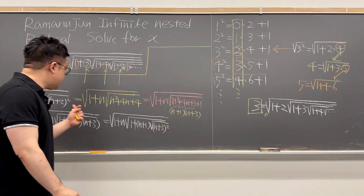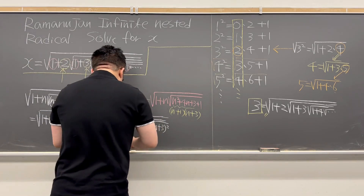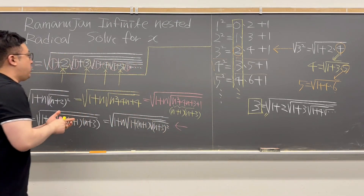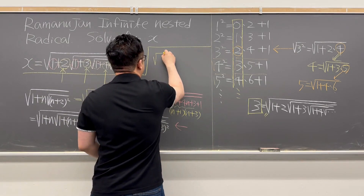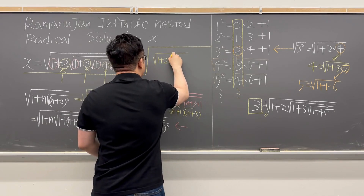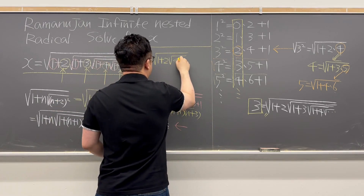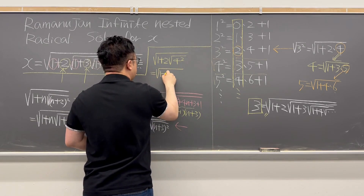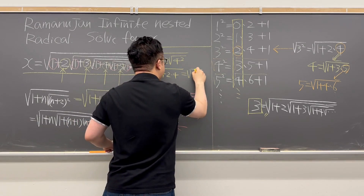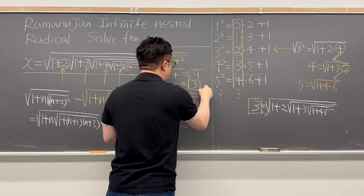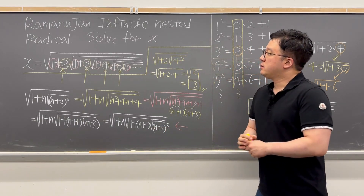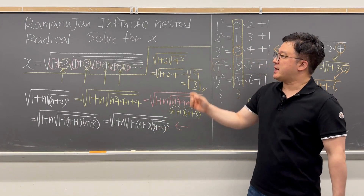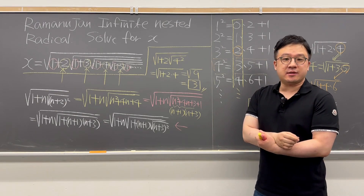That is exactly what we have in the original equation for x. So n must equal 2. Plugging in n=2: square root of 1 plus 2 times square root of (2+2)² equals square root of 1 plus 2 times 4, which is square root of 9, giving us 3 — exactly as we found. This was a pretty interesting Ramanujan infinite nested radical. I'll be back with more videos like this soon.